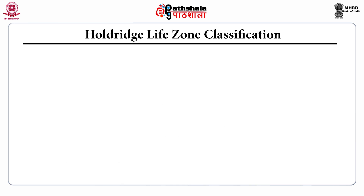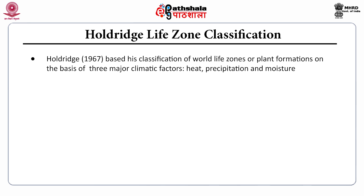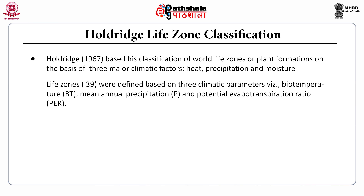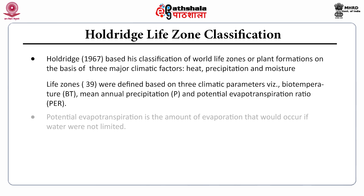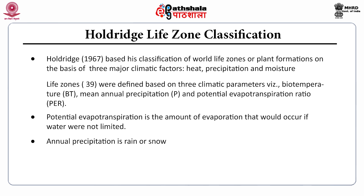Holdridge Life Zone classification: Holdridge in 1967 based his classification of the world's life zones or plant formations on three climatic factors — heat, precipitation and moisture. There are 39 life zones based on three climatic parameters: biotemperature, mean annual precipitation and potential evapotranspiration. Potential evapotranspiration is the amount of evaporation that would occur if water were not limited. Annual precipitation includes rain or snow.